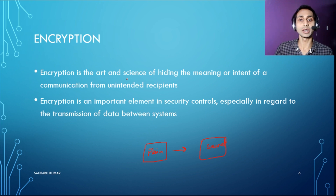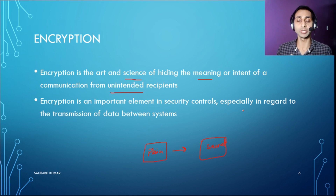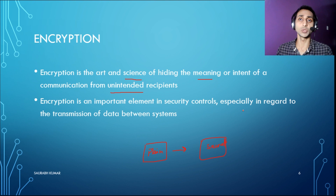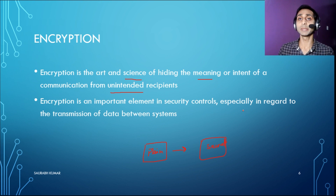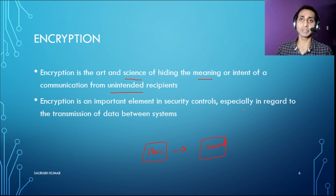Encryption is the art and science of hiding the meaning and intent of a communication from unintended recipients. It is a very important element in security controls, especially when data is being transferred, so that anyone using Wireshark or with their network interface in promiscuous mode cannot read your data because it is in encrypted format. Encryption will be covered again in chapter seven of the CISSP program with a lot more detail on symmetric, asymmetric, and other types of encryption.